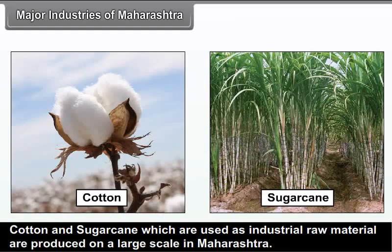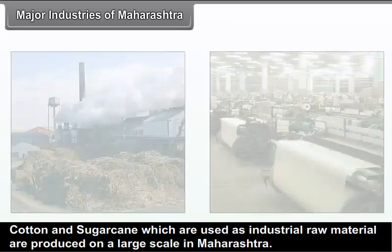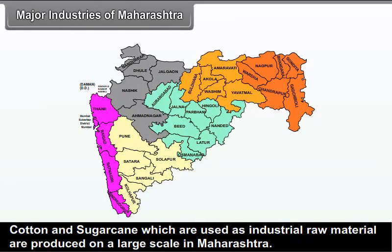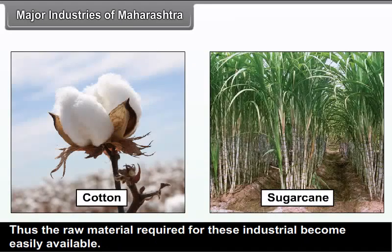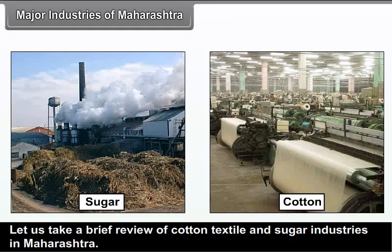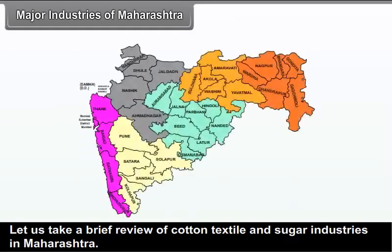Cotton and sugarcane, which are used as industrial raw materials, are produced on a large scale in Maharashtra. Thus, the raw material required for these industries becomes easily available. Let us take a brief review of cotton textile and sugar industries in Maharashtra.